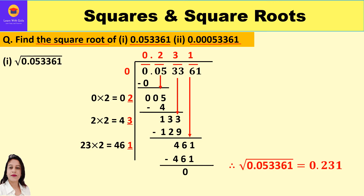Both these numbers are in decimal form and we have to find their square root using the long division method. The first step is to form the pairs. Since these are decimal numbers, they have a whole number part and a decimal part separated by a decimal point. For the whole number part, we form pairs from right to left, and for the decimal part, we form pairs from left to right.